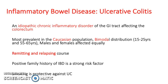UC is an idiopathic chronic inflammatory disorder of the GI tract affecting the colorectum. It is most prevalent in the Caucasian population and has a bimodal distribution of 15–25 years and 55–65. Males and females are affected equally. It follows a remitting and relapsing course, and a positive family history of IBD is a strong risk factor. Smoking is protective against UC.